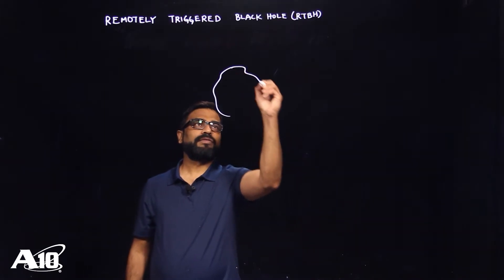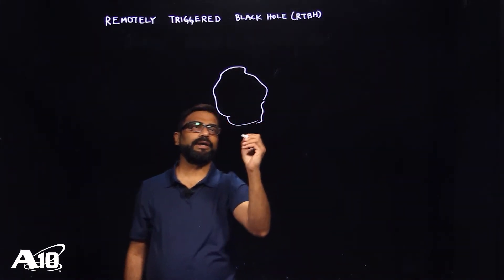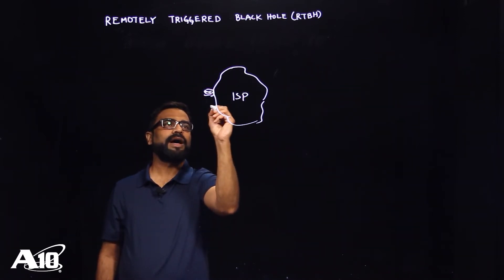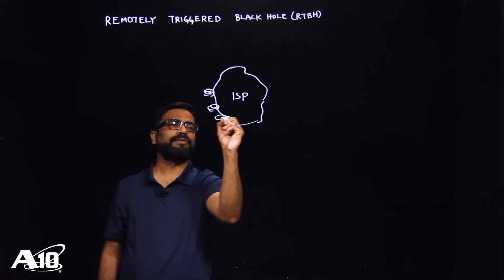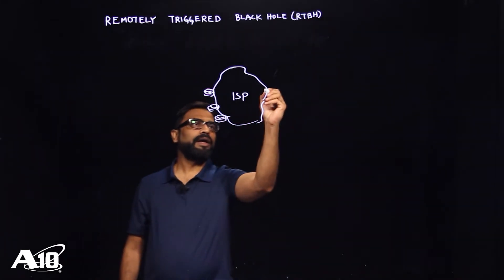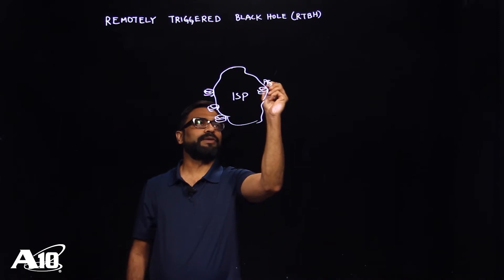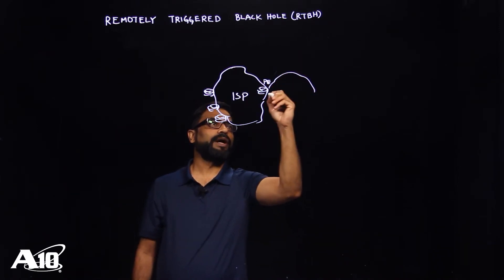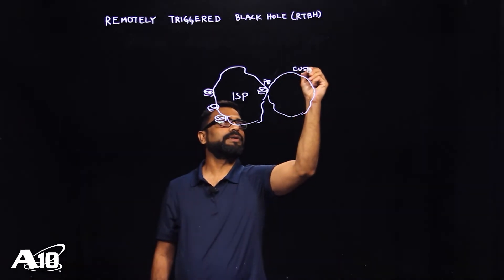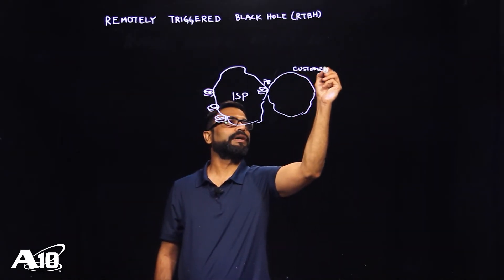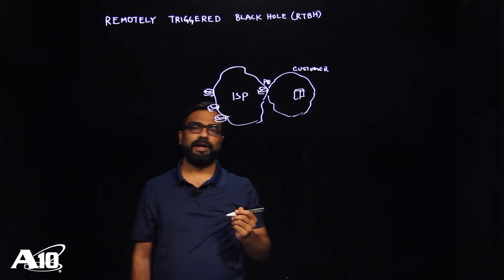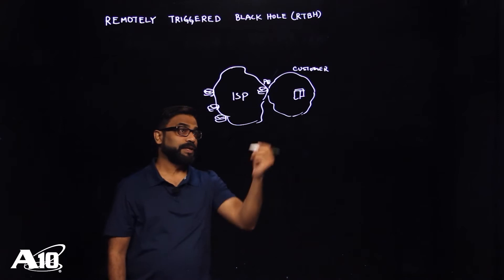I will start off by drawing an ISP core. And let's say I have few edge devices providing internet connectivity. And then I have a provider edge device providing service to one of my customer. Let me just write it down. And let's say this customer is hosting a web server.